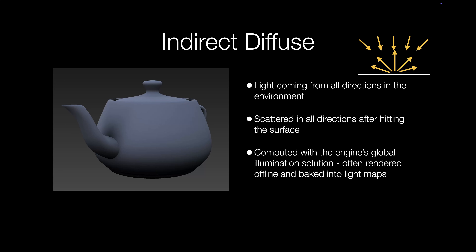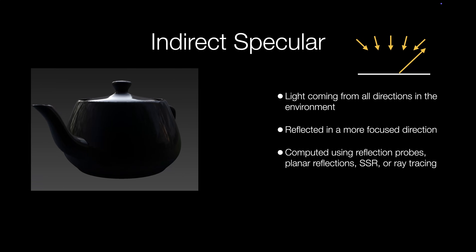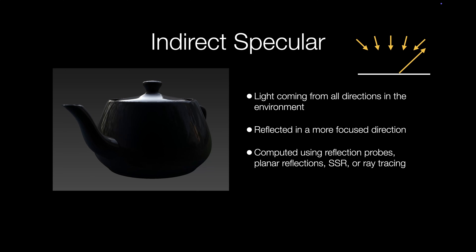This process can take many hours in complex scenes. Finally, we have indirect specular. Some people just call this reflections. It's also fairly complex to create this effect. Most game engines provide several different ways to create this effect, like reflection probes, planar reflections, and screen space ray tracing. The most accurate method for creating these reflections is with real ray tracing, but it's also the most expensive and wasn't even possible to do in real time until just recently.